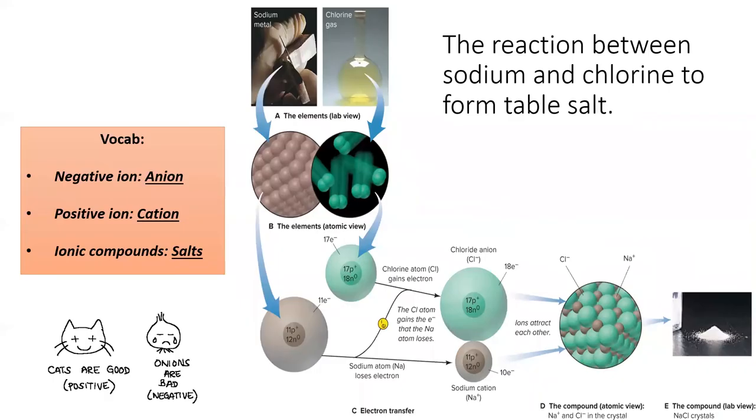Returning to real chemistry, here's the reaction between sodium metal and chlorine gas. Sodium loses an electron, becoming a cation. Chlorine gains an electron, becoming an anion. Notice that both ions now contain a noble number of electrons, which is why the compound formed, table salt, is quite unreactive.